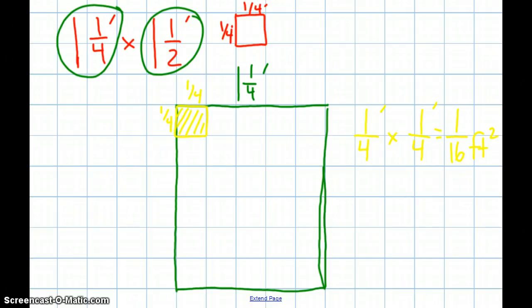I can then count up 1, 2, 3, 4, 5, times 1, 2, 3, 4, 5, 6, and I now know that I have 30 boxes. So, what I can now do is multiply 30 times 1/16. And that is really saying 30 over 1, times 1 over 16, equals 30 sixteenths.